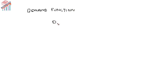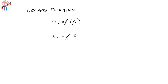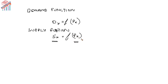Under the demand function, demand for commodity x is a function of the price of that commodity. The quantity demanded is dependent on the independent variable, which is price, because how much quantity an individual demands depends on price. Similarly, under the supply function, supply of x is the dependent variable and the price of x is the independent variable.